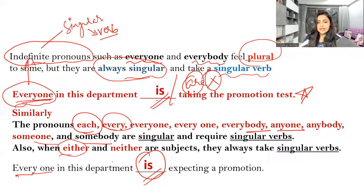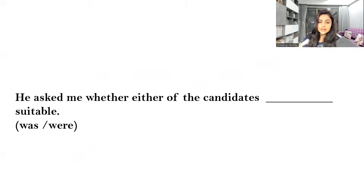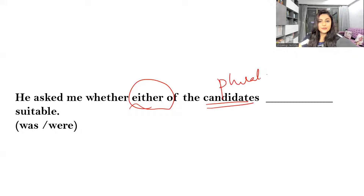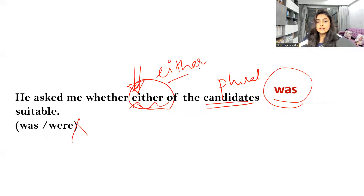Along with that, the words 'either' and 'neither' are always singular — they always take a singular verb. Our first practice sentence is based on 'either': 'He asked me whether either of the candidates are suitable.' Candidates are plural, but the answer requires a singular verb. 'Was' is the correct answer, not 'were' — because 'either' is always singular.